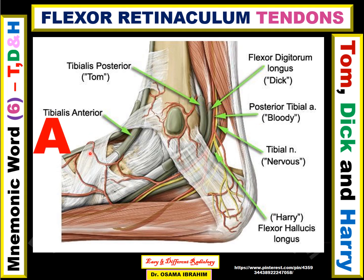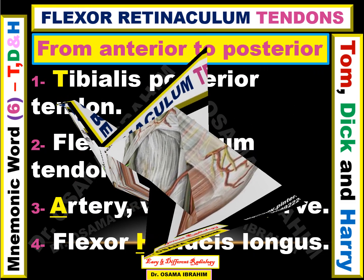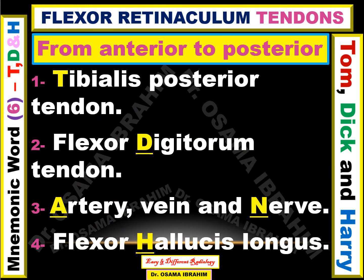This is the arrangement of tendons within the flexor retinaculum from anterior to posterior. This is the anterior aspect and this is the posterior aspect of the ankle, where this is the Achilles tendon. The flexor retinaculum tendons from anterior to posterior are: first, tibialis posterior tendon; second, flexor digitorum longus; then artery, vein, and nerve — posterior tibial artery and tibial nerve; and flexor hallucis longus, the most posterior tendon.